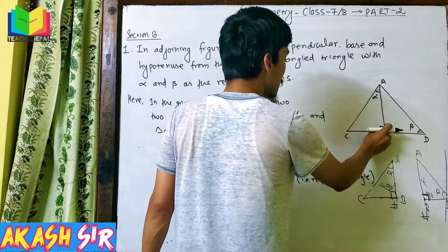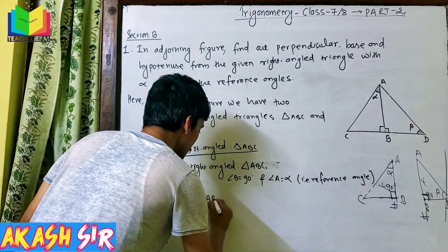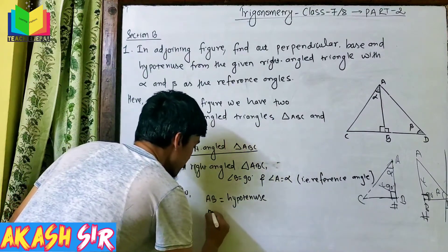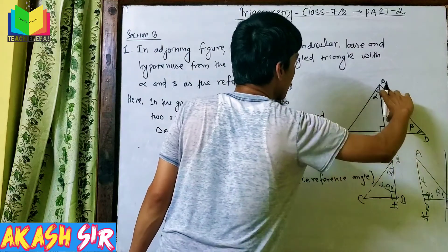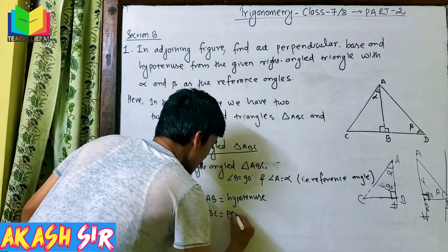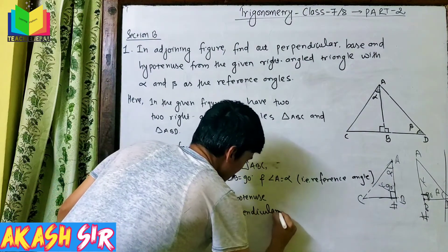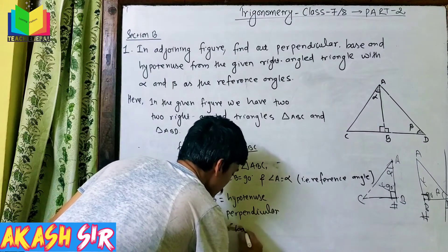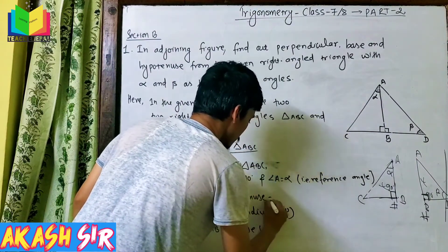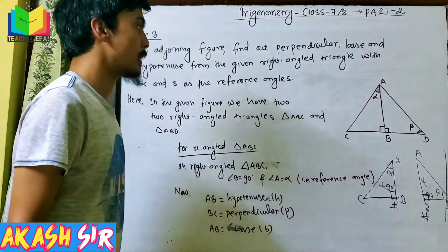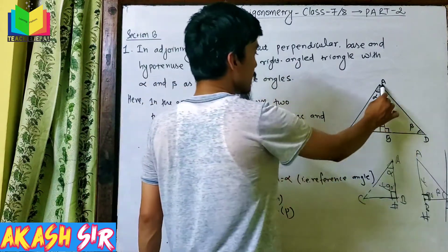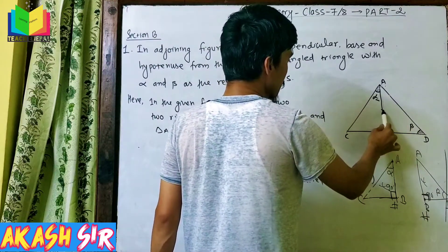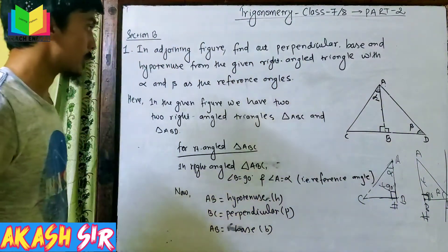First, we start with hypotenuse. You have to choose hypotenuse — hypotenuse is BC. So the base will be AB. Perpendicular — simply AB is present. That is simply the base. So the hypotenuse is AC, AB is the base, and BC is the perpendicular. So this is the find-out.